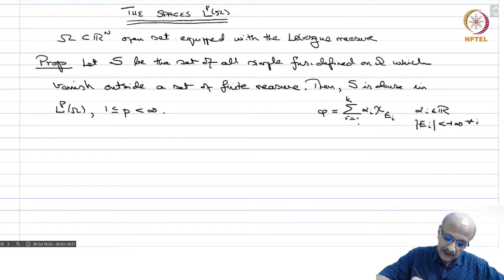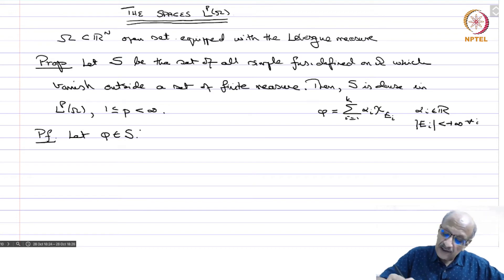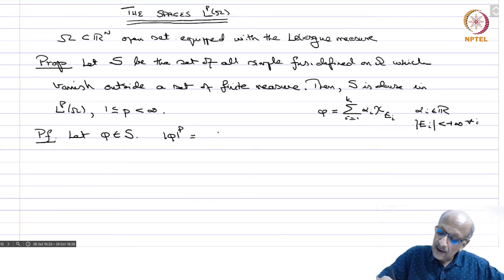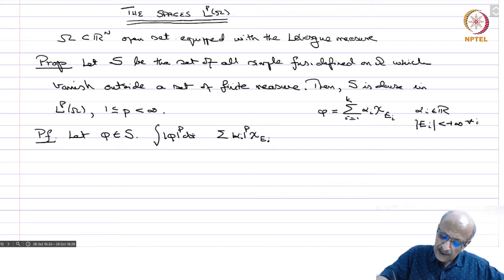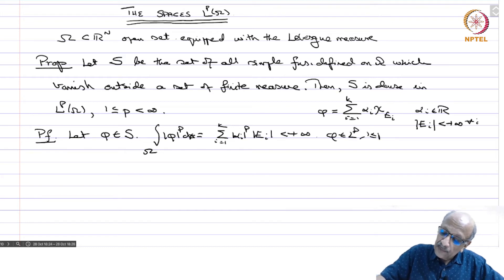Such functions are dense in Lp of omega. Proof: Let phi belong to S. Then phi vanishes outside a set of finite measure and mod phi power p is sigma mod alpha_i power p times chi of e_i. So the integral of phi power p dx over omega equals sigma i from 1 to k of mod e_i, which is finite.